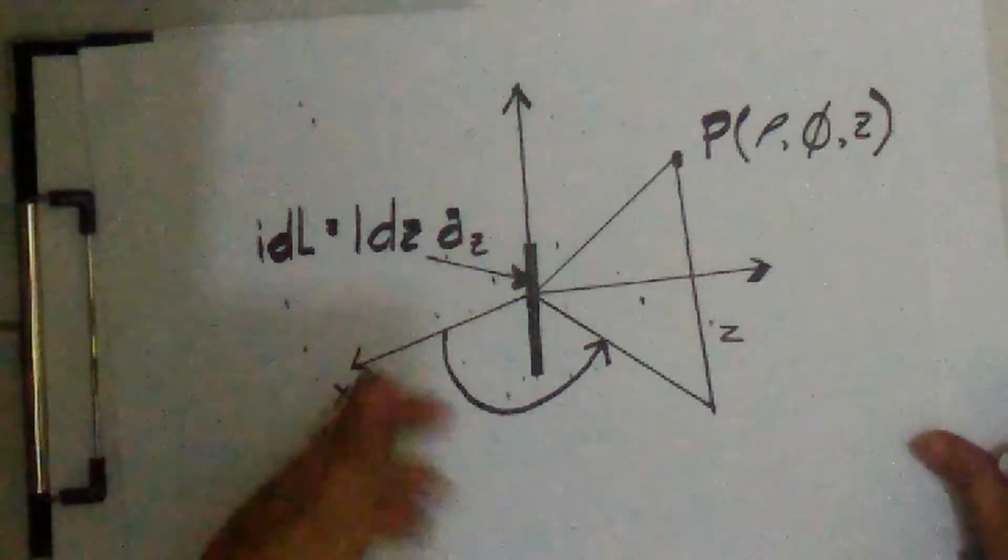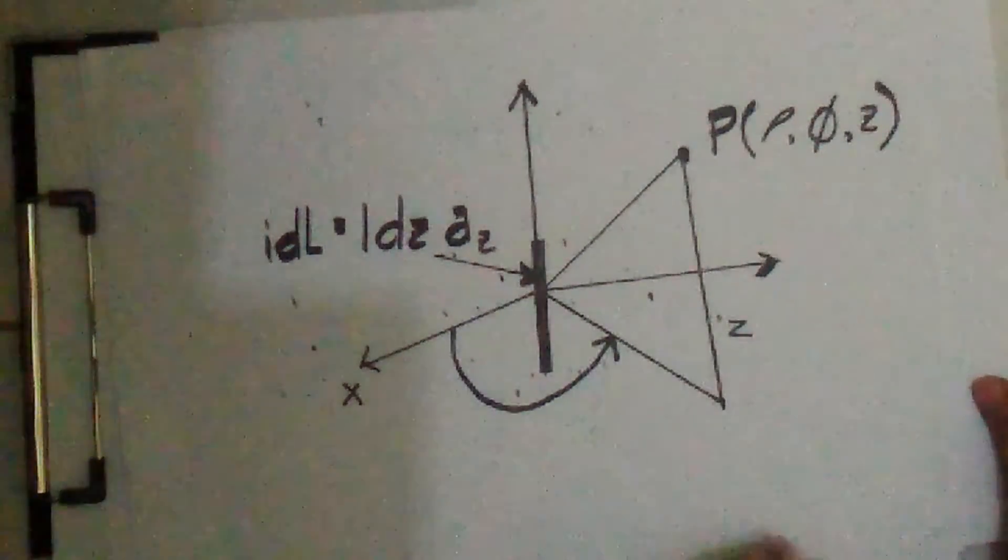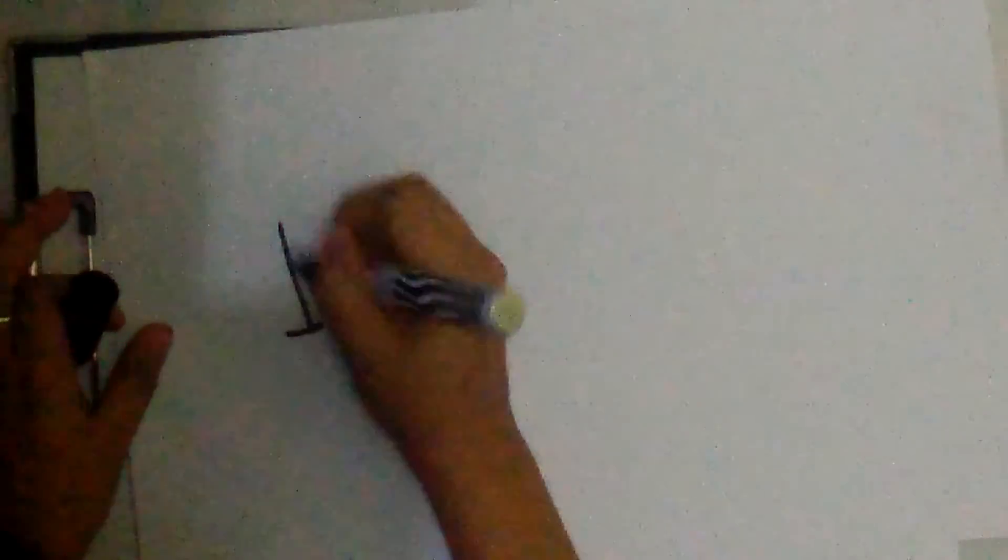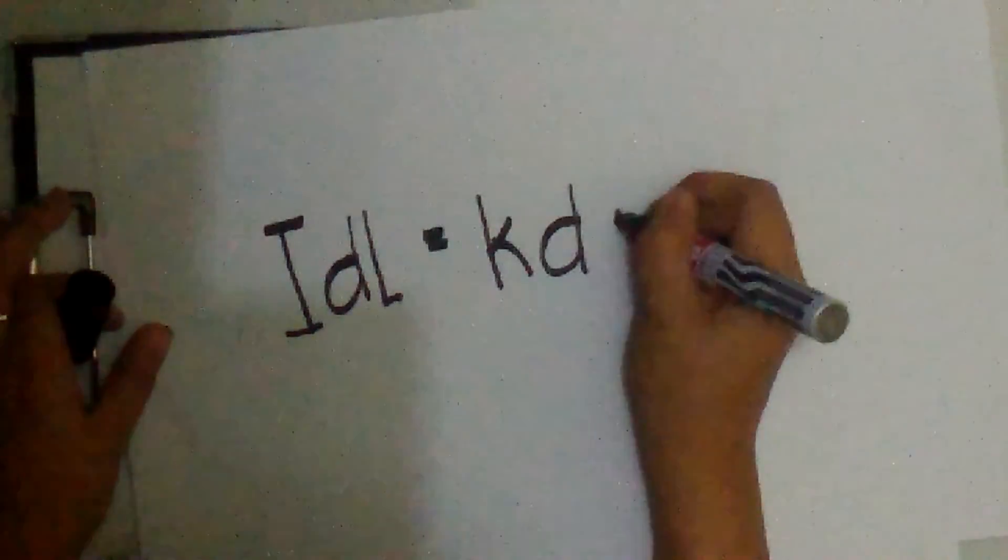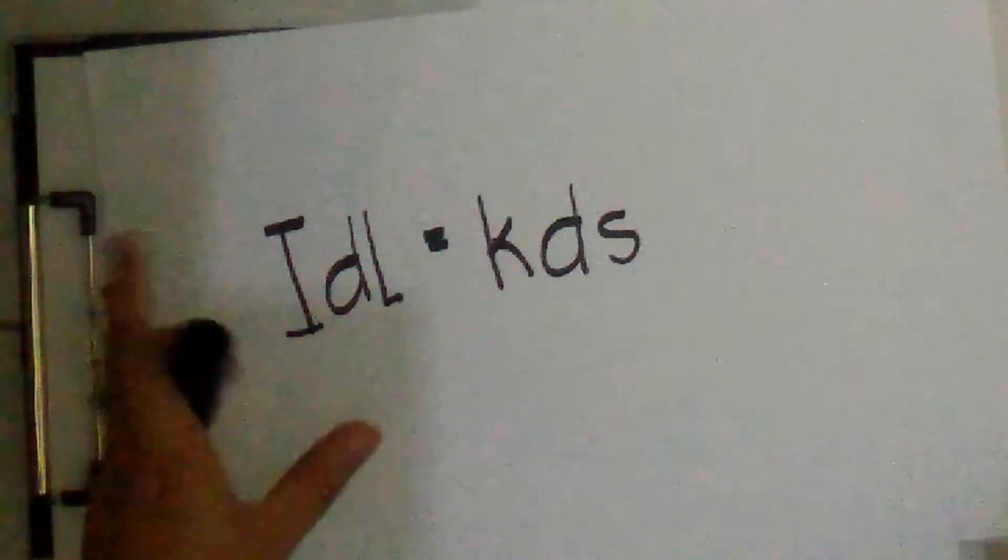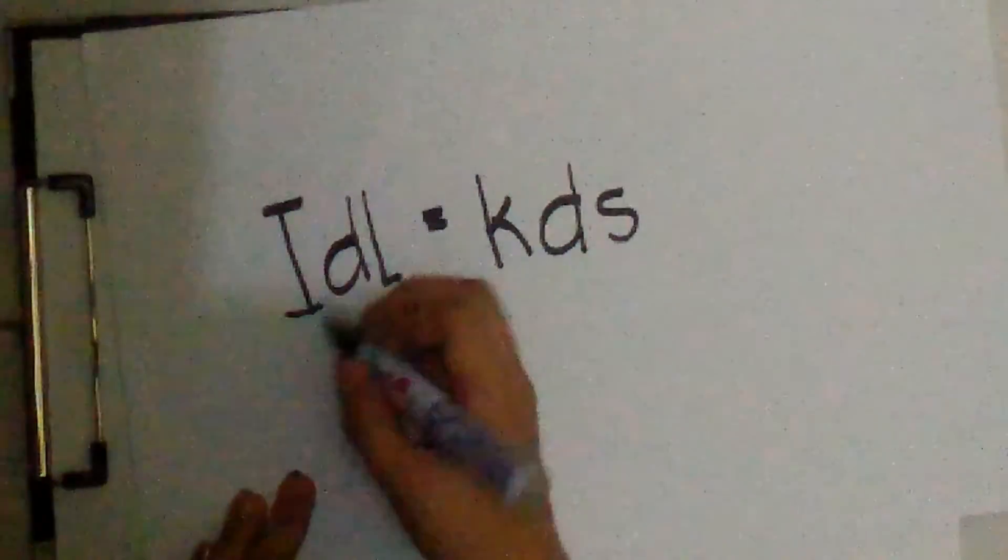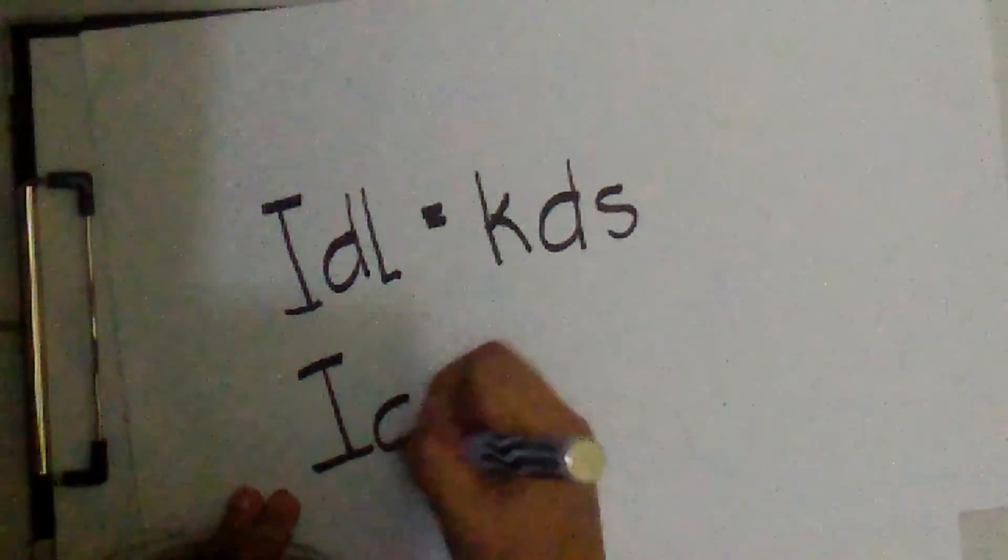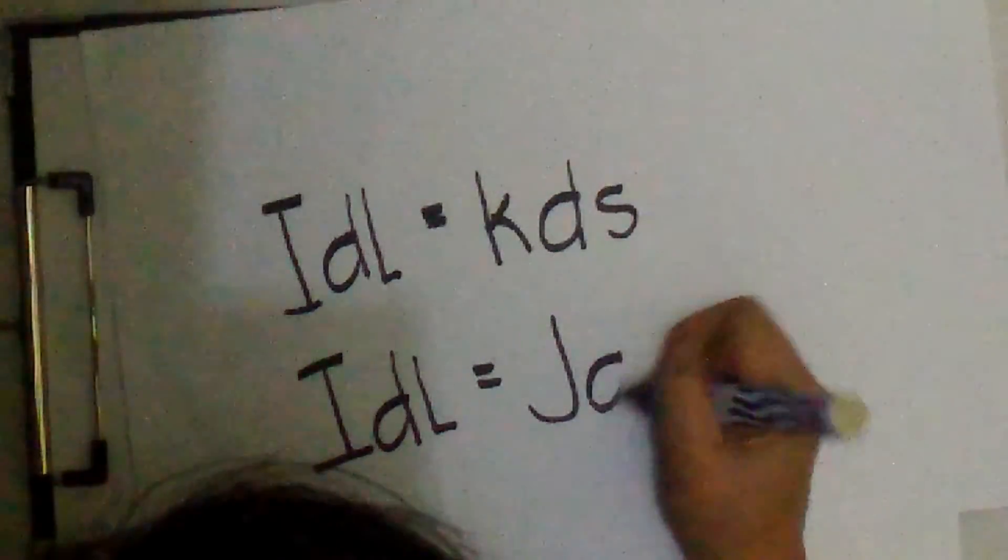In the expression for the vector magnetic potential, A can also be obtained for a current source which is distributed, for a current sheet K. The differential current element becomes I dL is equal to K dS. In case of the current flow throughout a volume with a density J, we have I dL is equal to J dV.